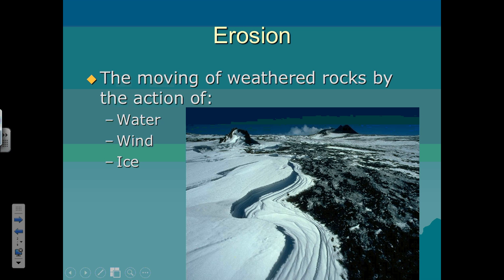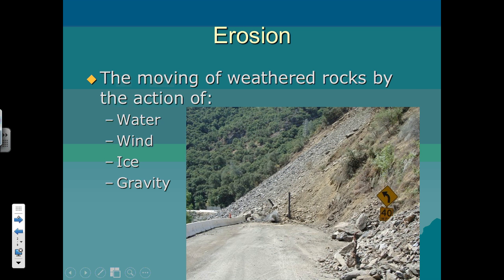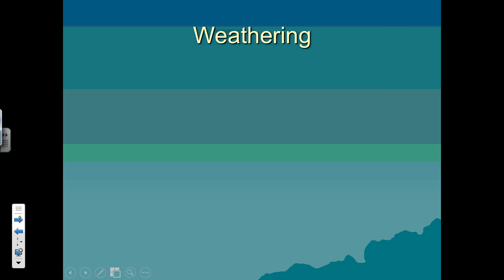They can be moved by ice, typically through glaciers moving, and they can be moved by gravity. Here you see a landslide; we could have slumps — there's a variety of different ways of what are called mass movements that cause ground movement or erosion.